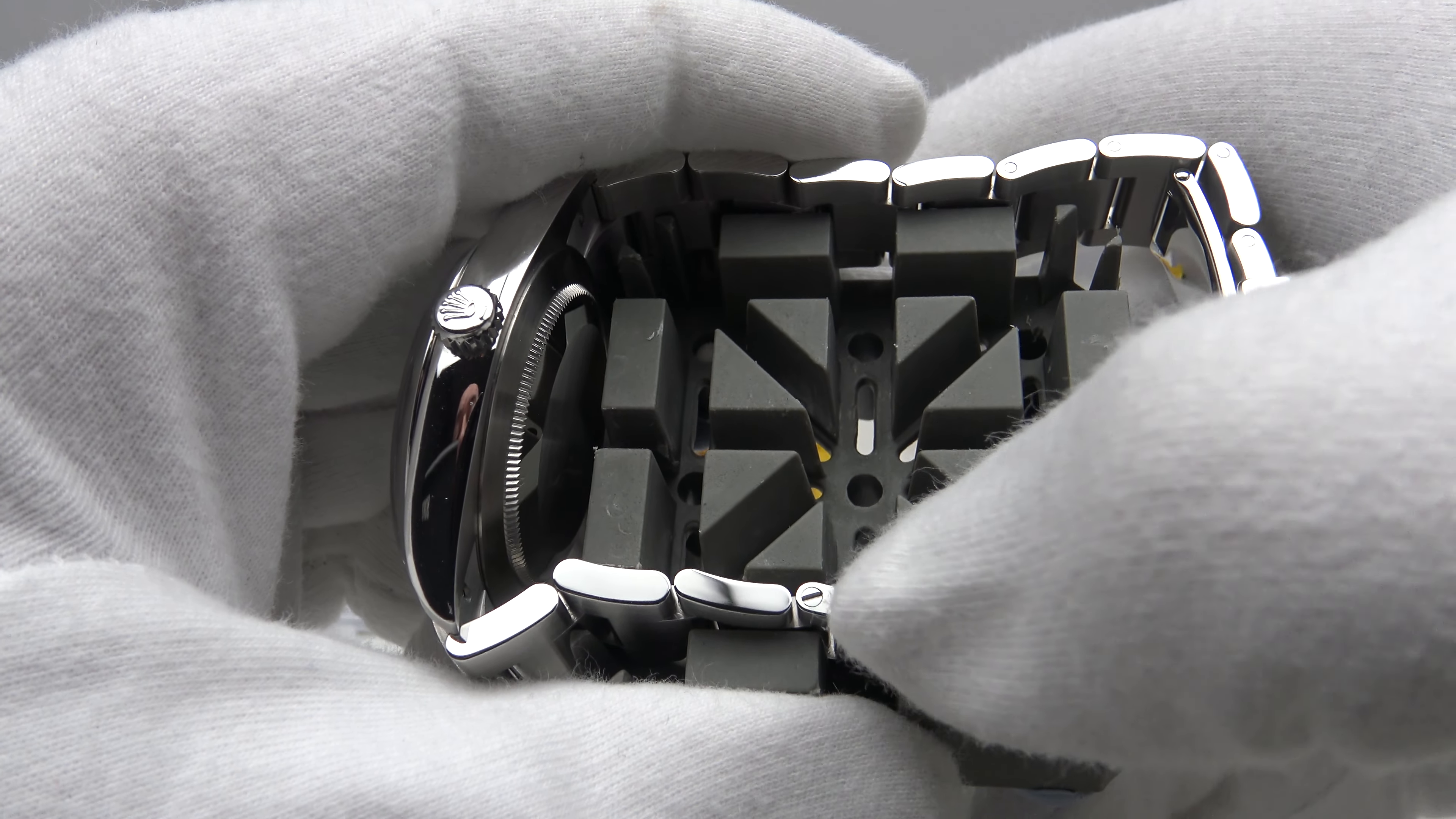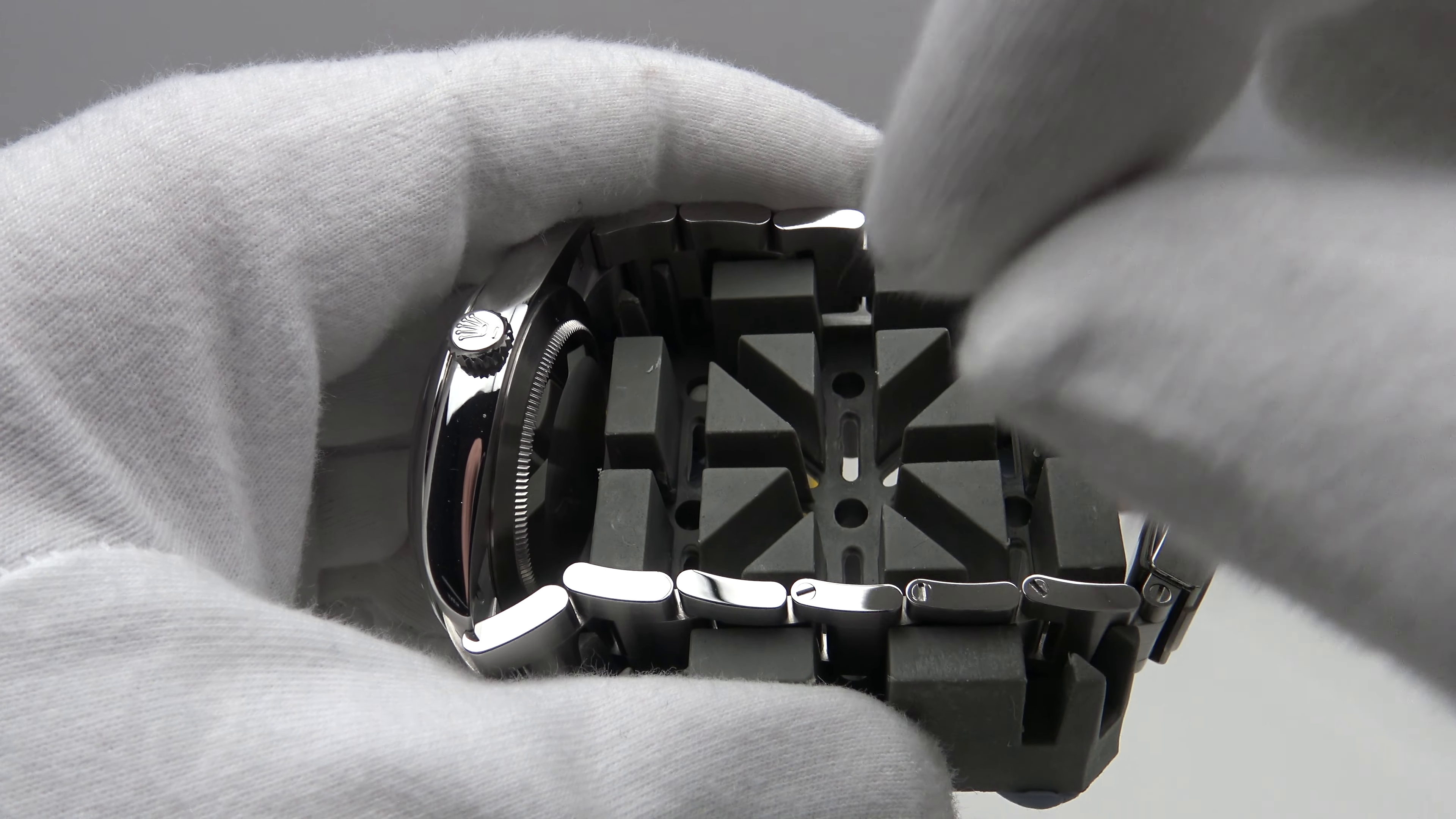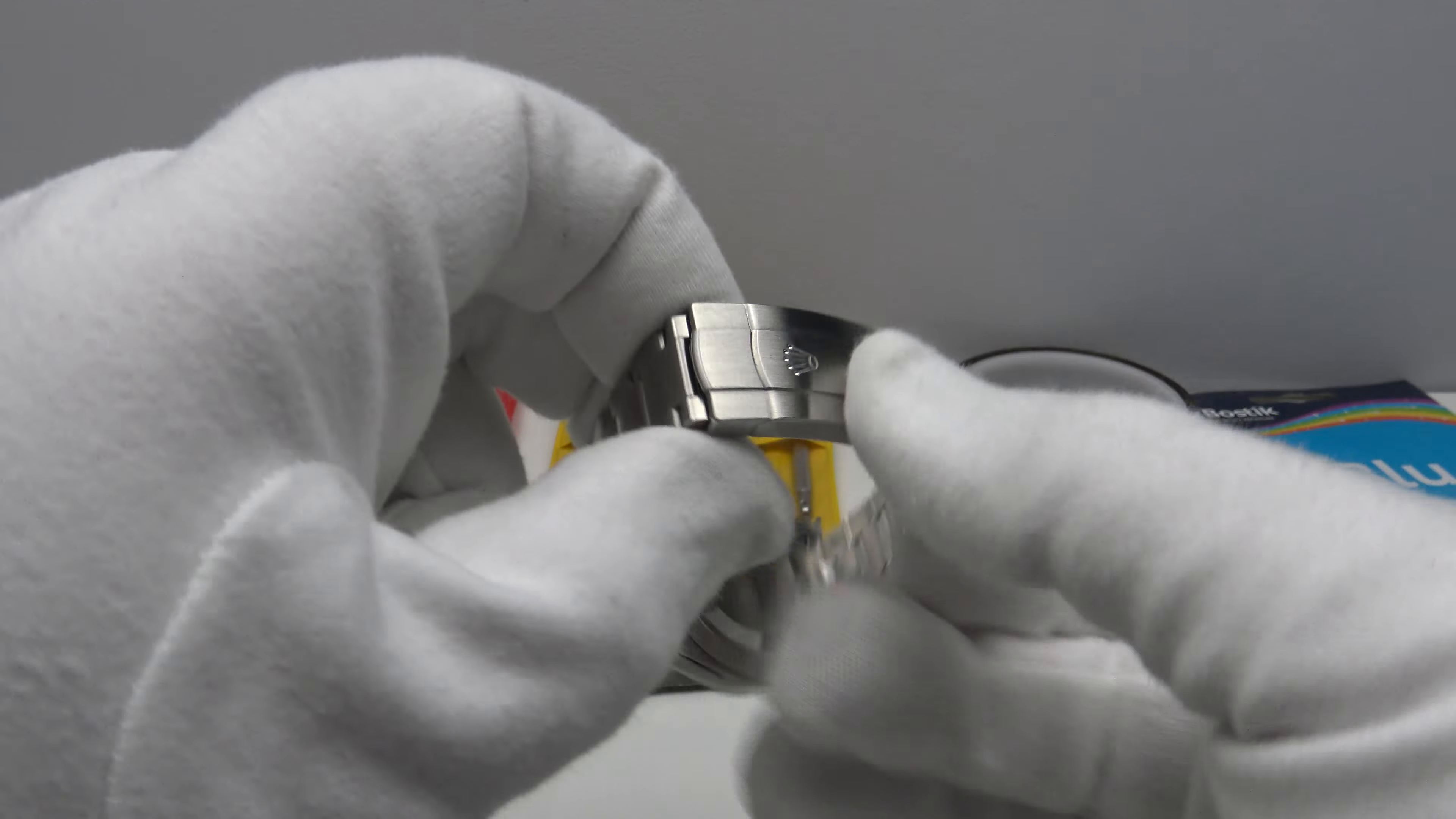So then I unscrew the screw, remove it and then split the bracelet and add the additional links and then put the screw back in and then cover it again with polyimide tape, do the reverse and then screw it back up using the screwdriver tip. So, I'll give you a wrist shot and you can see how it fits on my eight inch wrist.